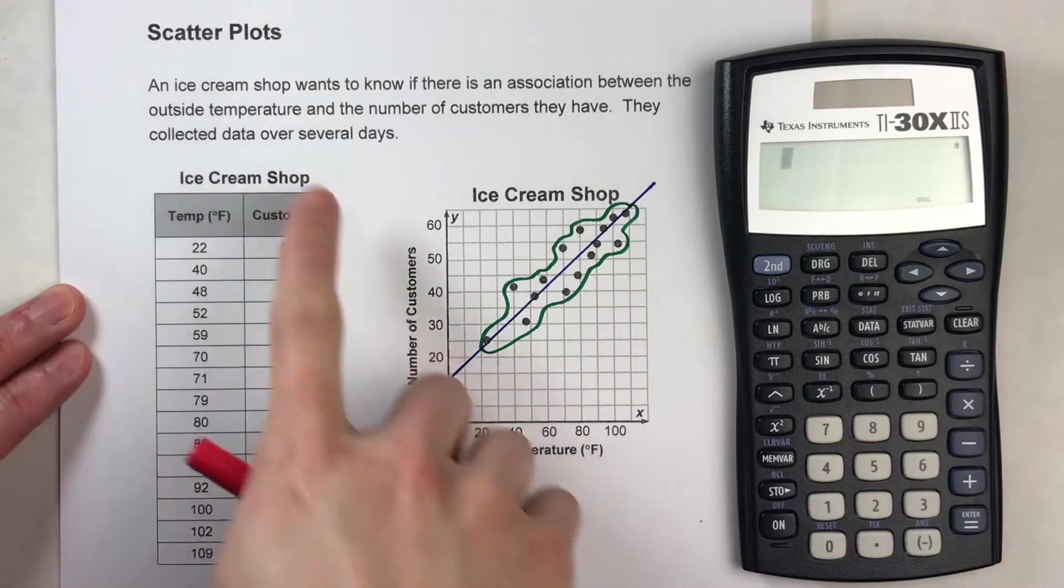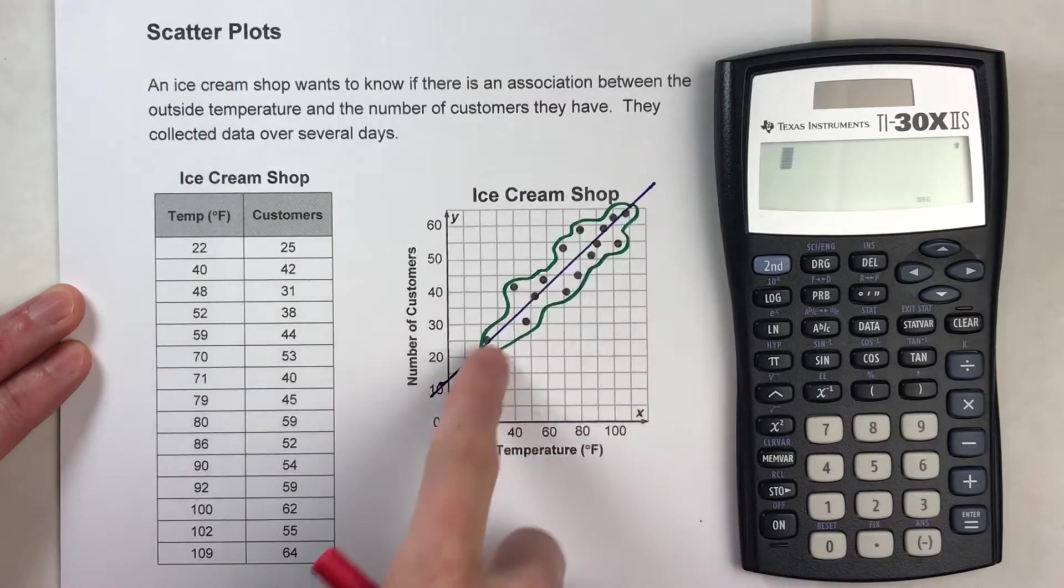Alright, so today I'm going to show you how to write an equation for a scatter plot trend line.